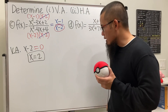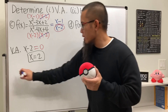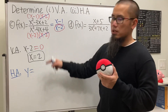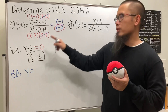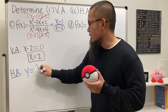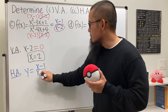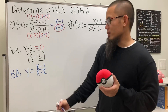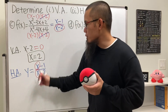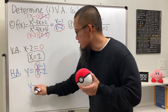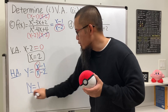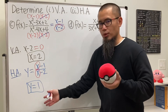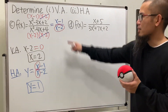For the horizontal asymptote of part (c), write y = (x − 1)/(x − 2) using the reduced version. Looking at the leading terms, x over x reduces to 1, so y = 1.